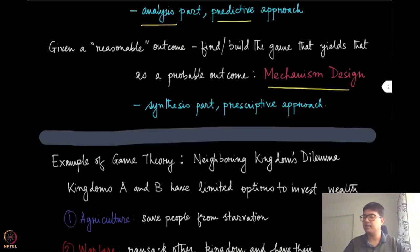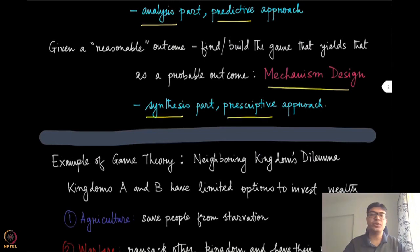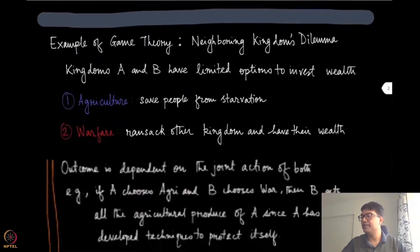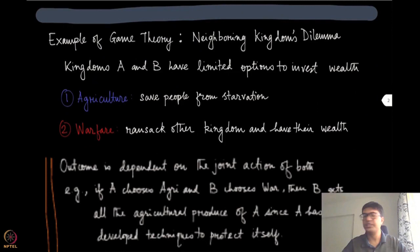Quite naturally, mechanism design is the synthesis part, as we have already discussed in the classical engineering courses. The approach there will be prescriptive — we are going to give a specific prescription on how you should design this game such that you get all those reasonable outcomes. Now let's start with an example to illustrate all these points.